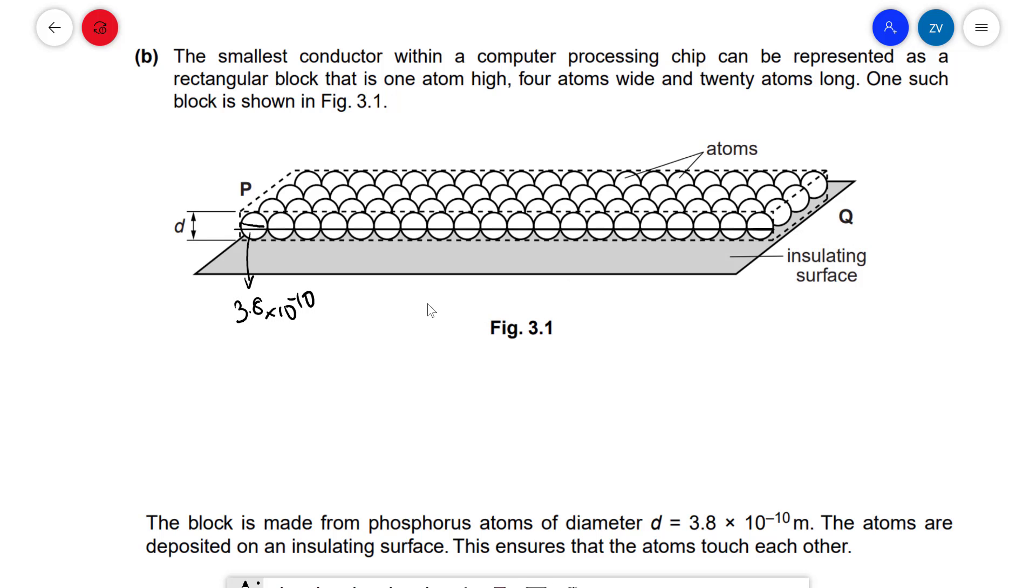Because we know that this is 20 atoms long, the length all across this side will actually be 20 times d. So length is equal to 20d, and by the same logic our width is going to be 4 because it's 4 atoms wide.